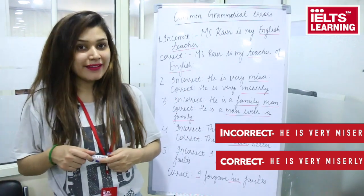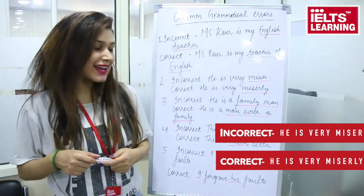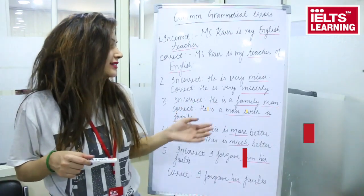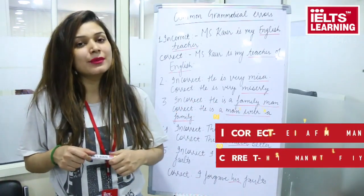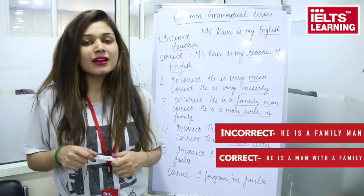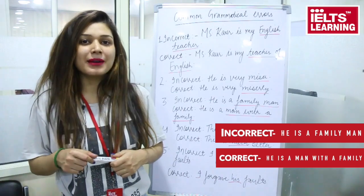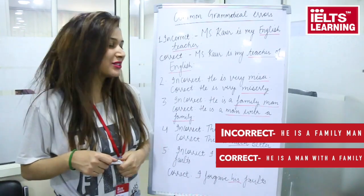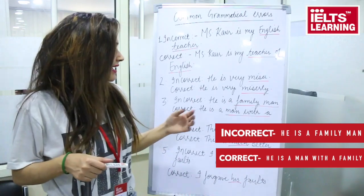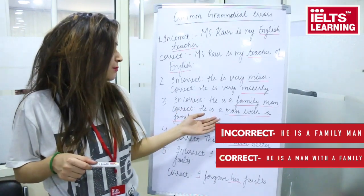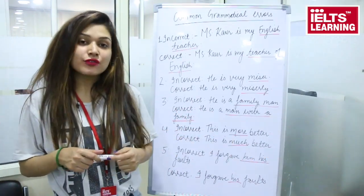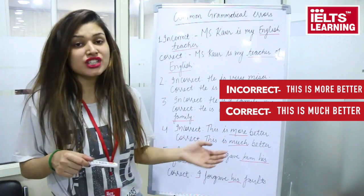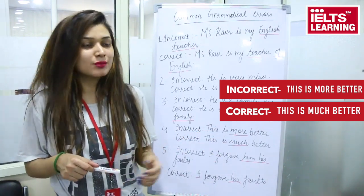The correct form of the second example is 'he is very miserly.' The third sentence says 'he is a family man' — basically it's correct but grammatically it's a slang, so it's not correct. The correct form is 'he is a man with the family.'